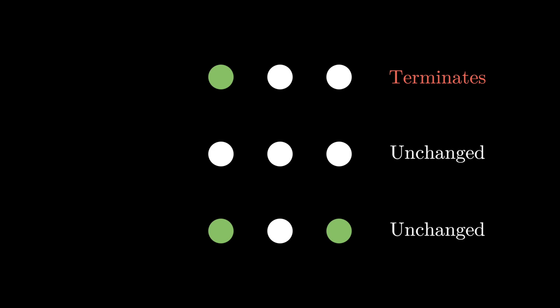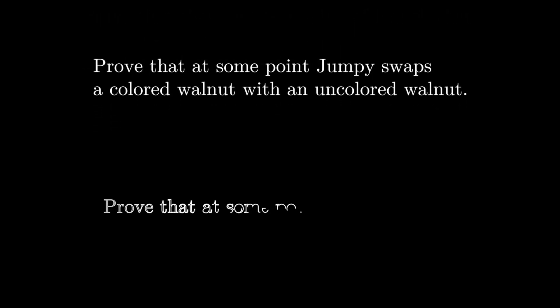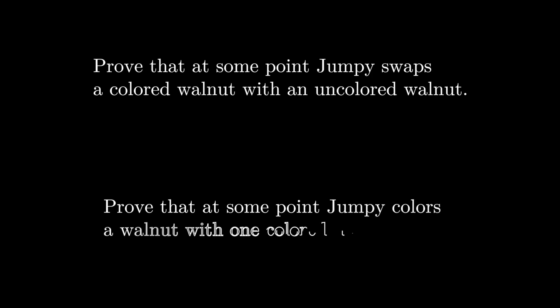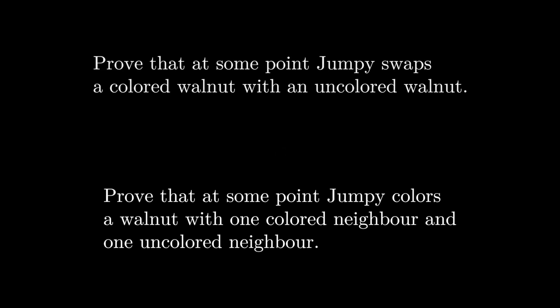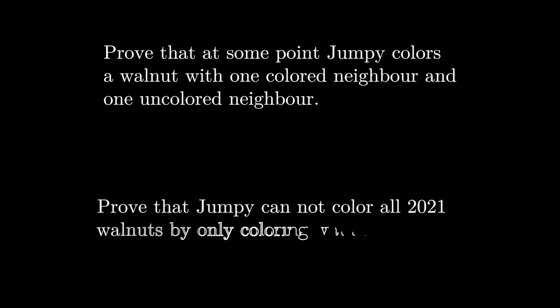So then these moves that come before this first swap with one green and one white doesn't change the coloring. We might as well just not be swapping the nuts at all. Then this problem just becomes that we are supposed to prove that if Jumpy wants to color all 2021 walnuts, he must at some point color a walnut with one colored and one uncolored neighbor.